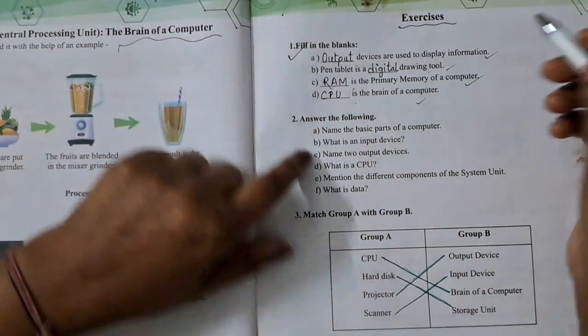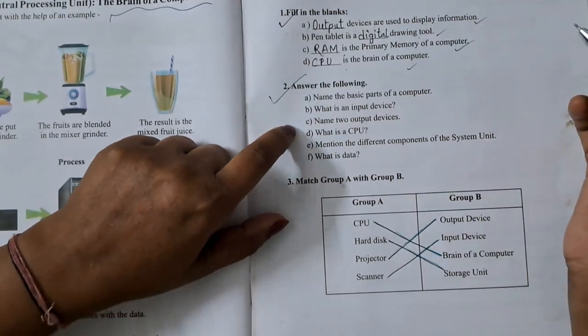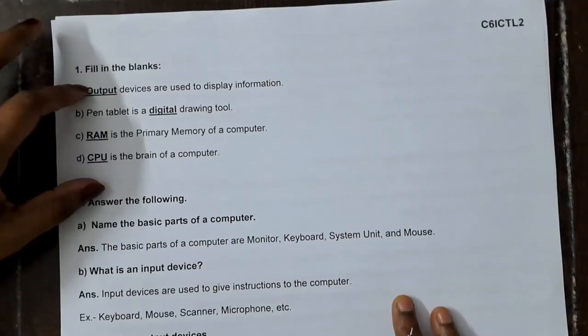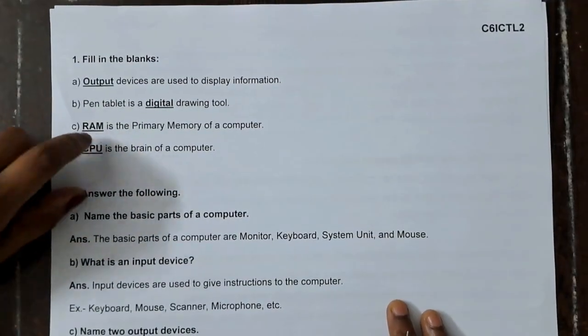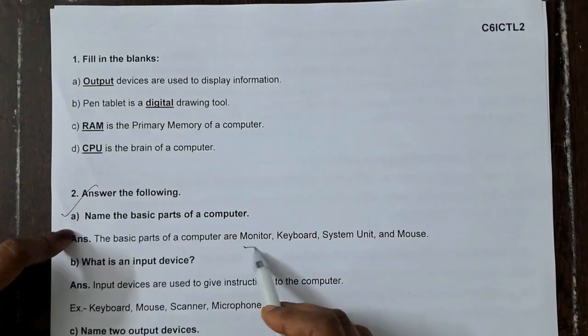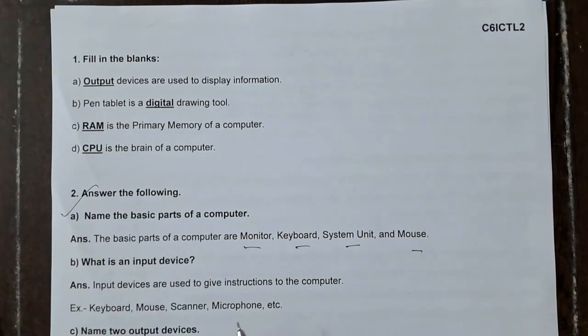Next, we will do another question. Name the basic parts of a computer. The basic parts of a computer: monitor, keyboard, system unit and mouse.